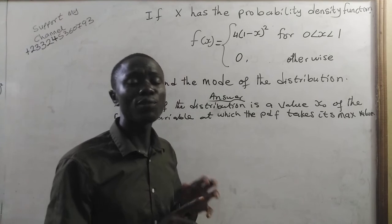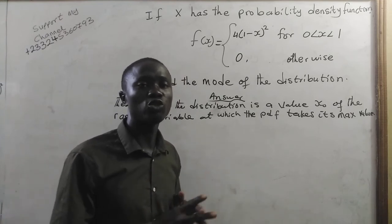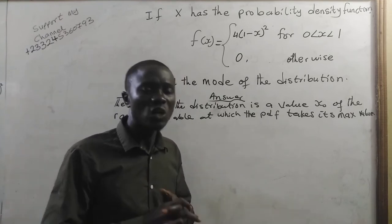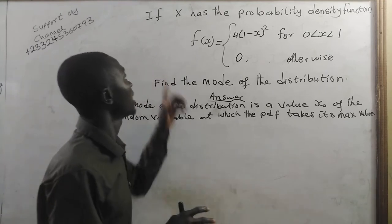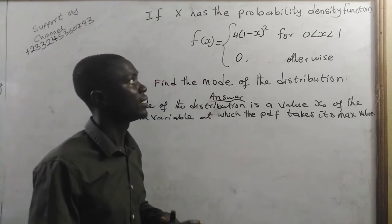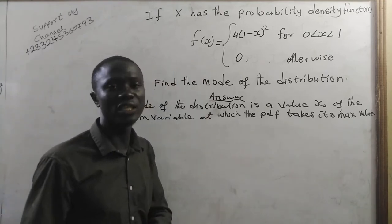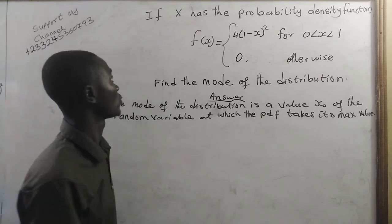In this lesson, you are going to find the mode of a distribution of a continuous random variable that has a probability density function. Now, let's look at this question.